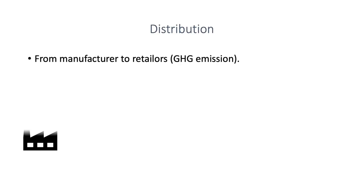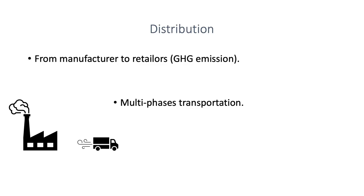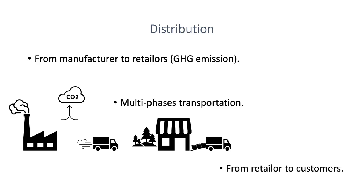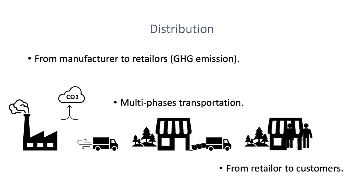The distribution phase could be very simple: cargo goes directly from the manufacturer to the retailer. After packaging, cargo is shipped to the corresponding retailers according to their orders. GHG emissions will be generated by the fuel used in transportation. When the shop is ready, customers come by and pick up face masks themselves or via logistics.